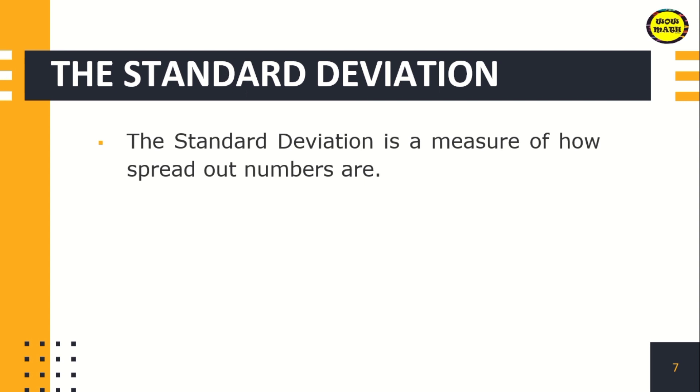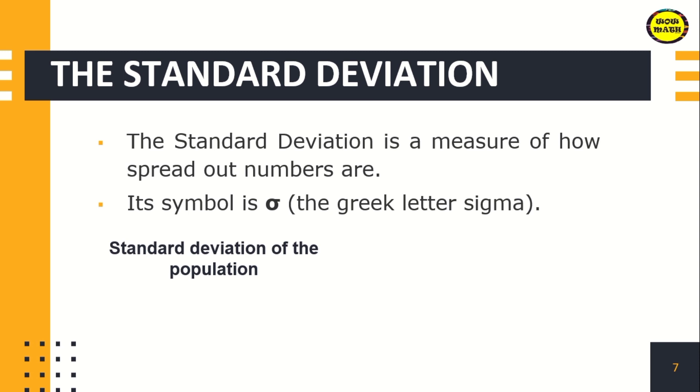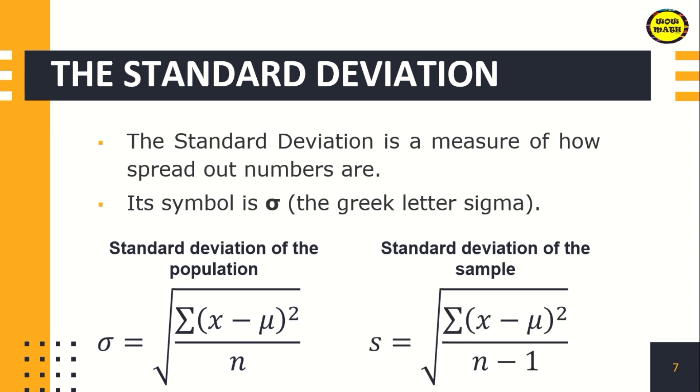And for standard deviation, this is a measure of how spread out numbers are. Its symbol is the Greek letter sigma. For getting the standard deviation of the population, we use this formula, or simply get the square root of your variance. For the standard deviation of the sample, we use small letter s, or simply get the square root of the formula for the variance of the sample.